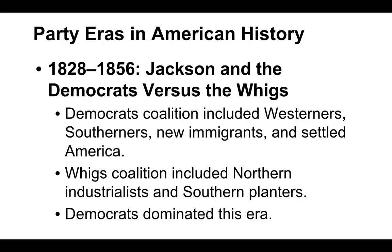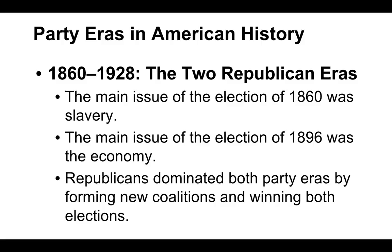From 1860 to 1928, we see a rise of the Republican Party — a brand new party on the scene, structured differently. From 1860 to the end of the 1800s, the Republican Party was about the opposition of slavery. But the main issue after slavery was abolished, from about 1896 until 1928, was the economy, and they became very pro-business and pro-capitalist — and they continue to be so today. Republicans dominated both party eras by forming new coalitions and winning huge elections.